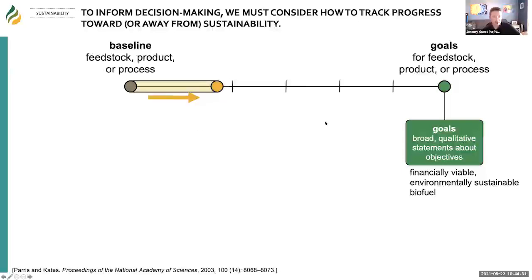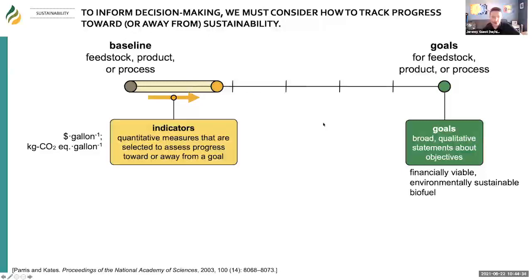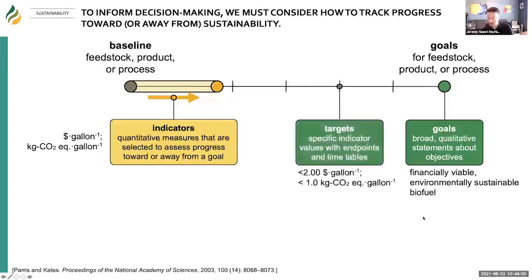To be able to do that, we use indicators — quantitative measures that we can look at to understand if we're making progress toward our goal. In our case, a lot of times that's like dollars per gallon or kilogram CO2 equivalents per gallon, where kilogram CO2 equivalents is our measure of global warming potential. Once we have these indicators and goals, we can then set targets: specific indicator values with specific timelines, such as targeting less than $2 a gallon by 2025.